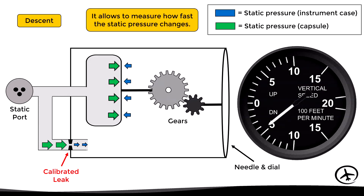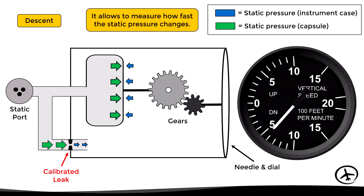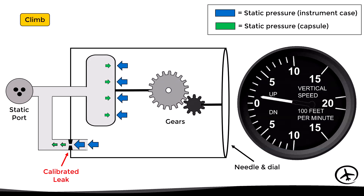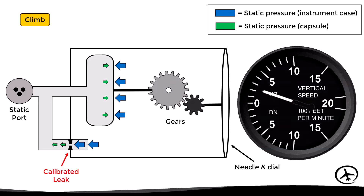Let's now see the climb scenario. In this case, the static pressure will decrease almost immediately in the capsule; however, due to the calibrated leak it doesn't decrease that fast in the instrument case. This creates a pressure differential which causes the capsule to contract, moving the needle to indicate a rate of climb.